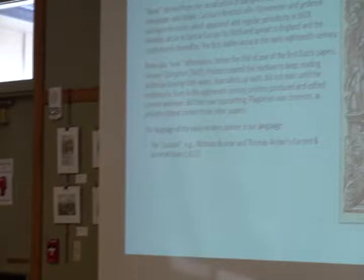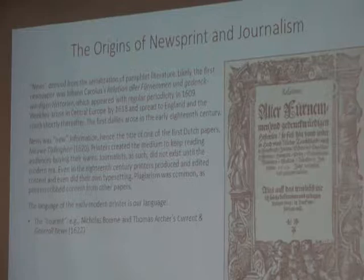What I'm suggesting is that news production was not a professional enterprise. But it looks like what we think of as newsprint. The language of early modern papers is the language that we use today — the Courant, for instance, as in the first paper in England, the Current and General News. The mail and correspondence — we often talk about correspondence today; you see this on cable network news. Correspondents in the early modern world were people who literally wrote into a printer, and the printer simply reproduced the written letter.